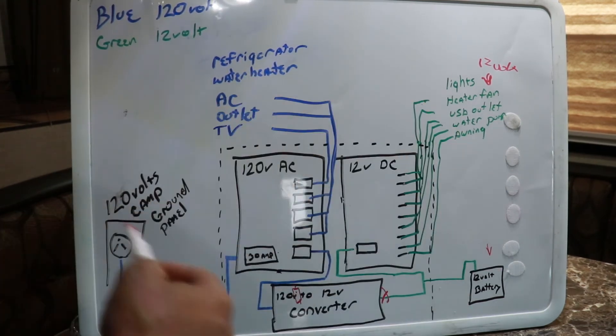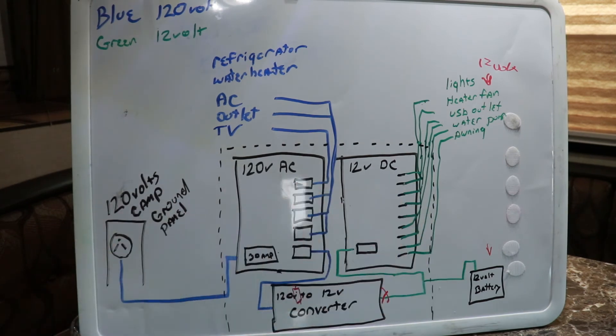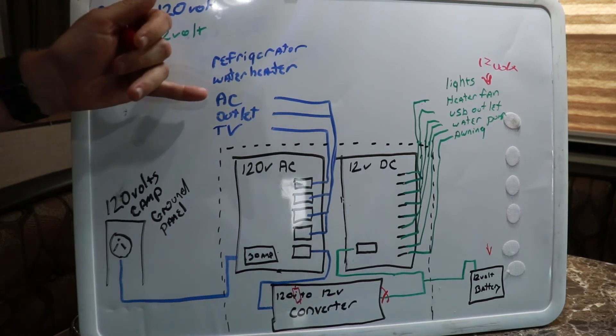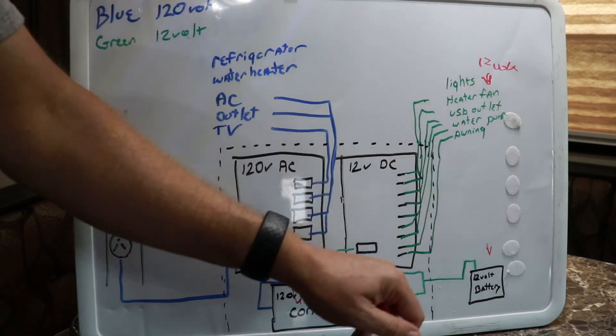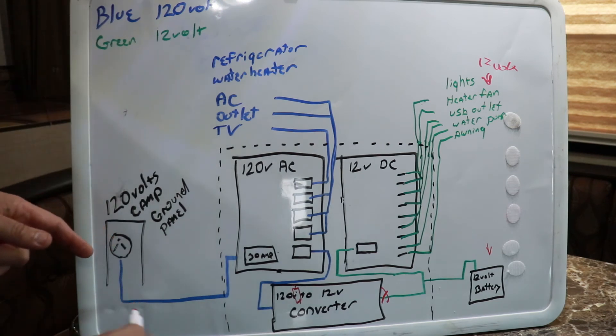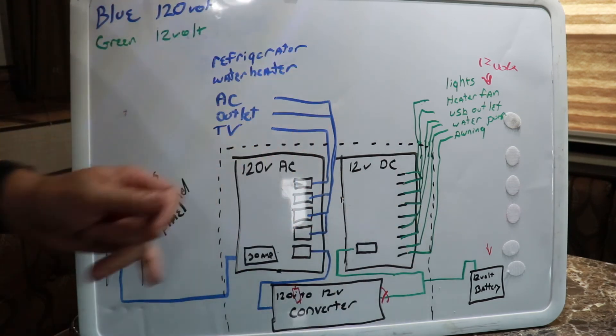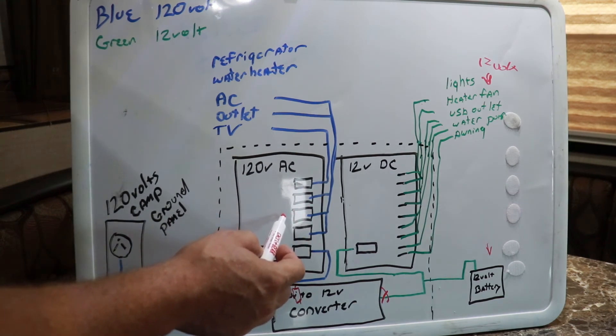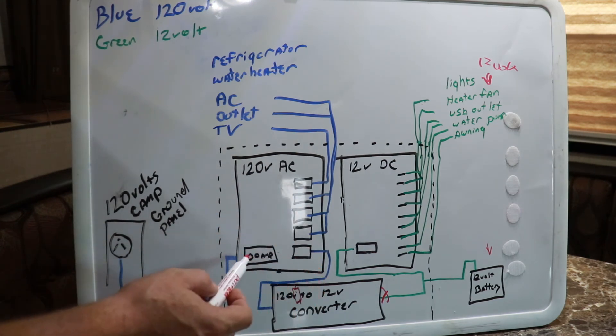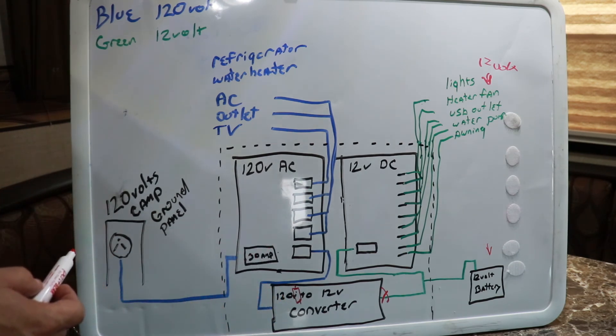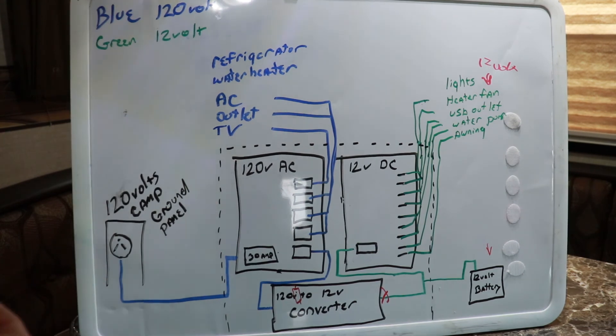As you can see, using this diagram here you could actually go through and troubleshoot anything. If your AC wasn't working, you're not going to be looking at the DC side of it because they don't even affect the DC. So if it's AC, you're gonna check the AC breaker. If that's good, then you'll check your 30 amp breaker coming in. If that's good, then you'll check back here.